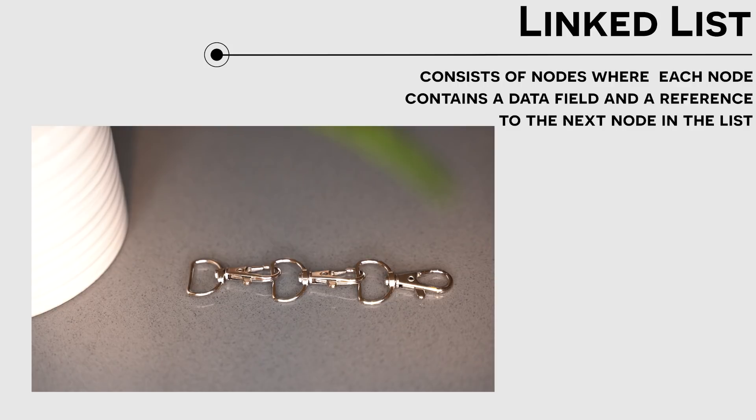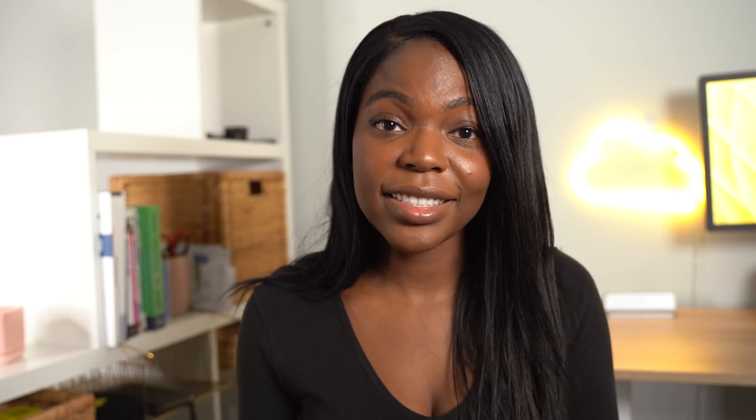Visually, a linked list reminds me a lot of connected keychains. Because the links are pointers, this provides us with some really cool advantages over arrays. If you want to add a specific node to the linked list, all you'd have to do is just change the pointer in a linked list just like all you'd have to do in a keychain is just unhook the other keychain. So insertion and deletion happen very quickly and they happen in constant time.